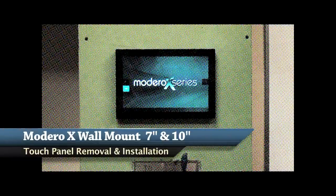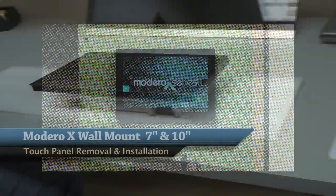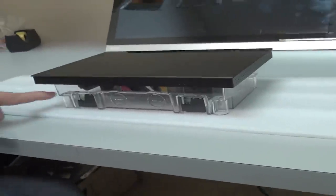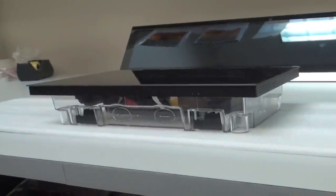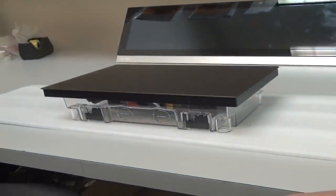Hi, this is the back box removal and install for 7-inch and 10-inch Madero X wall mounts. The panel arrives snapped into the back box. You'll need to remove it to install it in the wall.